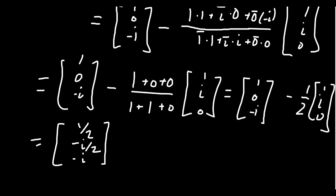And so this should be orthogonal to the original vector. Again, if you don't like the fractions, take out the 1 half. That gives you 1, negative i, and negative 2i, like so.